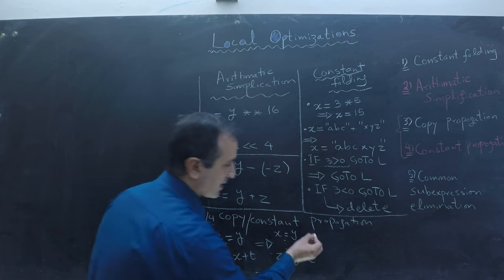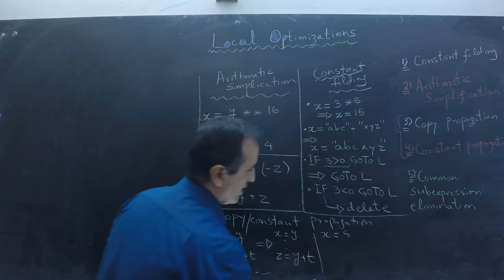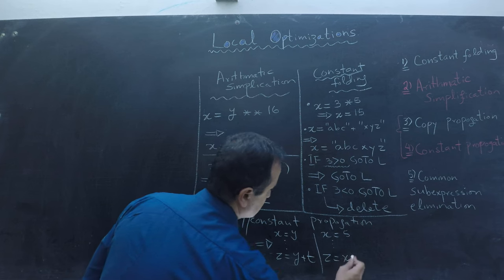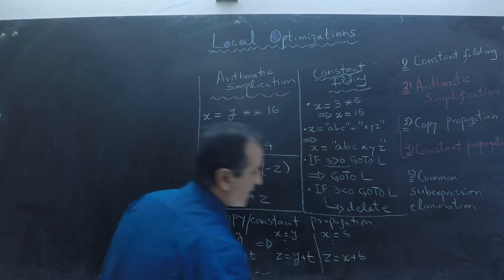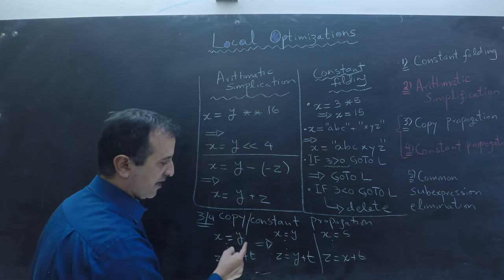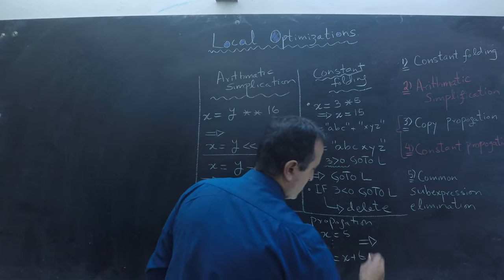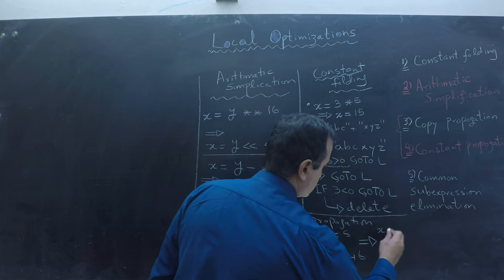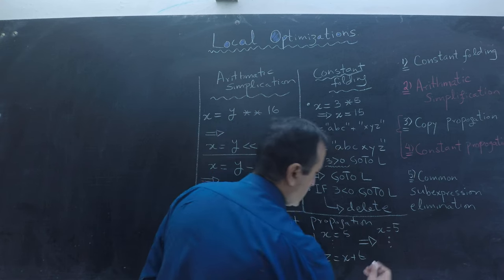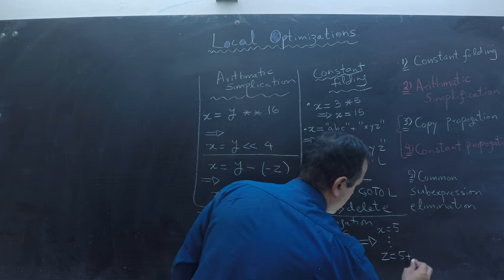Similarly, if I have a constant — like x equals to 5 followed by z equals to x plus t — then I should propagate that constant. Here I was propagating a variable, and here I'm propagating a constant. So my optimized code will be x equals to 5 (which dead code removal can handle later), and z equals to 5 plus t.